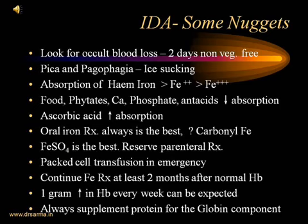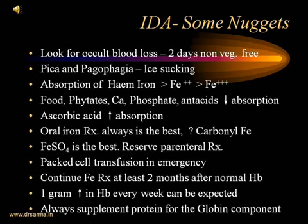Once we confirm the diagnosis of iron deficiency anemia, we need to treat the patient. First and foremost, look for occult blood loss — chronic occult blood loss due to hookworms, bleeding peptic ulcers, GI bleed, menorrhagia, or any other cause of chronic slow blood loss. If blood loss is occult, we need to do a benzidine test for occult blood loss. Remember: 2 days of non-vegetarian-free diet is required to avoid false positive results, as patients who take meat might give a false positive occult blood test.